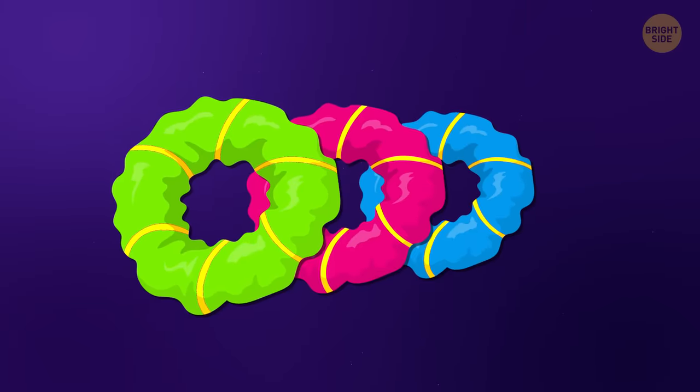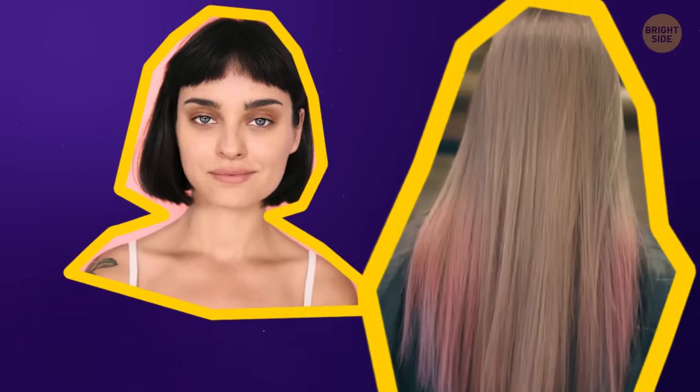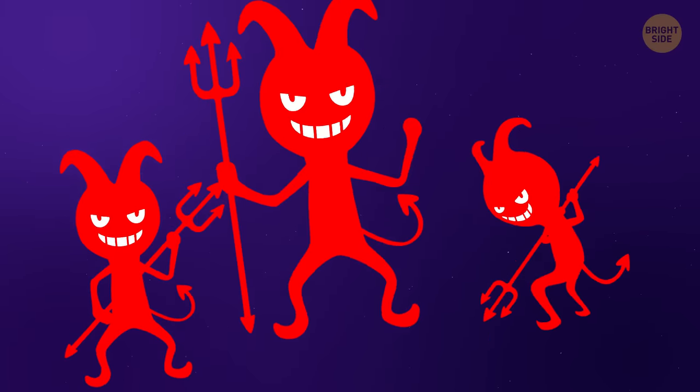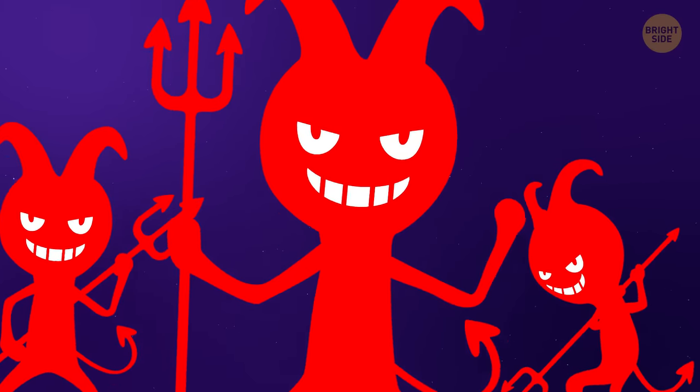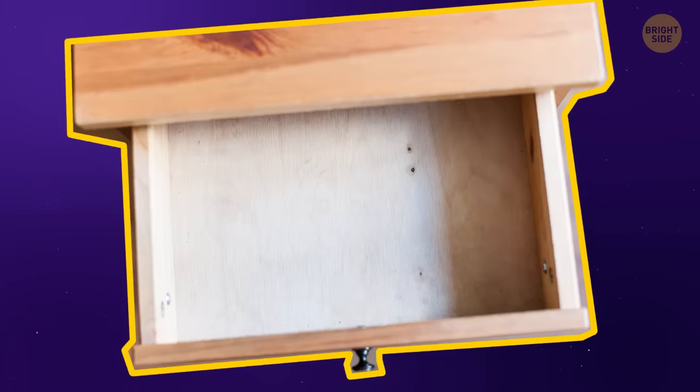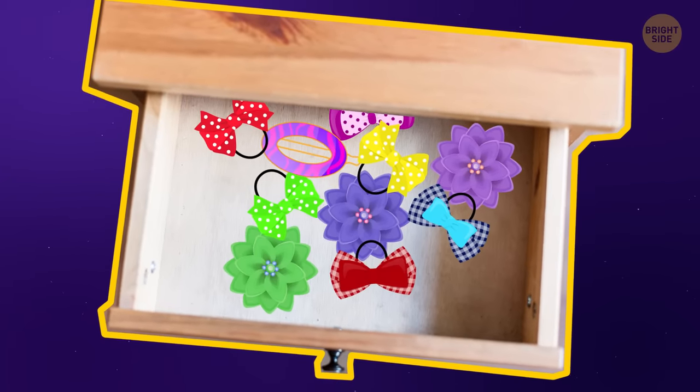Number 4: Hair ties. Short hair or long hair, these little elastic devils have been in our houses long enough to deteriorate. If you have a drawer with more broken hair elastics than good ones, then you need to get rid of them.